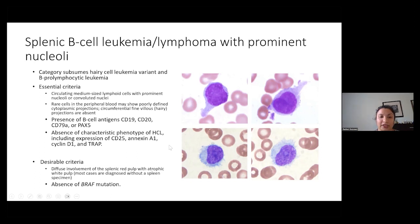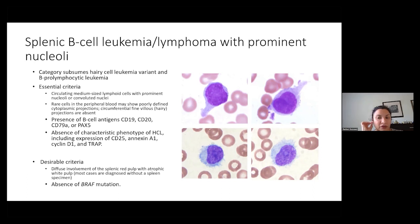In terms of the desirable criteria, diffuse involvement of the red pulp with atrophic white pulp would be one of the criteria, but this is usually seen on peripheral blood or bone marrow biopsy — spleens are rarely taken out for this entity, which is why it's considered desirable. Keeping it separate from hairy cell leukemia, there's also the absence of BRAF V600E as a desirable criterion.